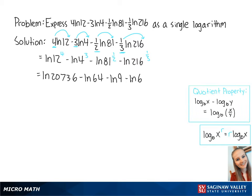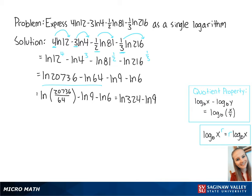Now we're going to use the quotient property to combine these two logs. This becomes the ln of 20,736 over 64 minus the ln of 9 minus the ln of 6, which equals the ln of 324 minus the ln of 9 minus the ln of 6.